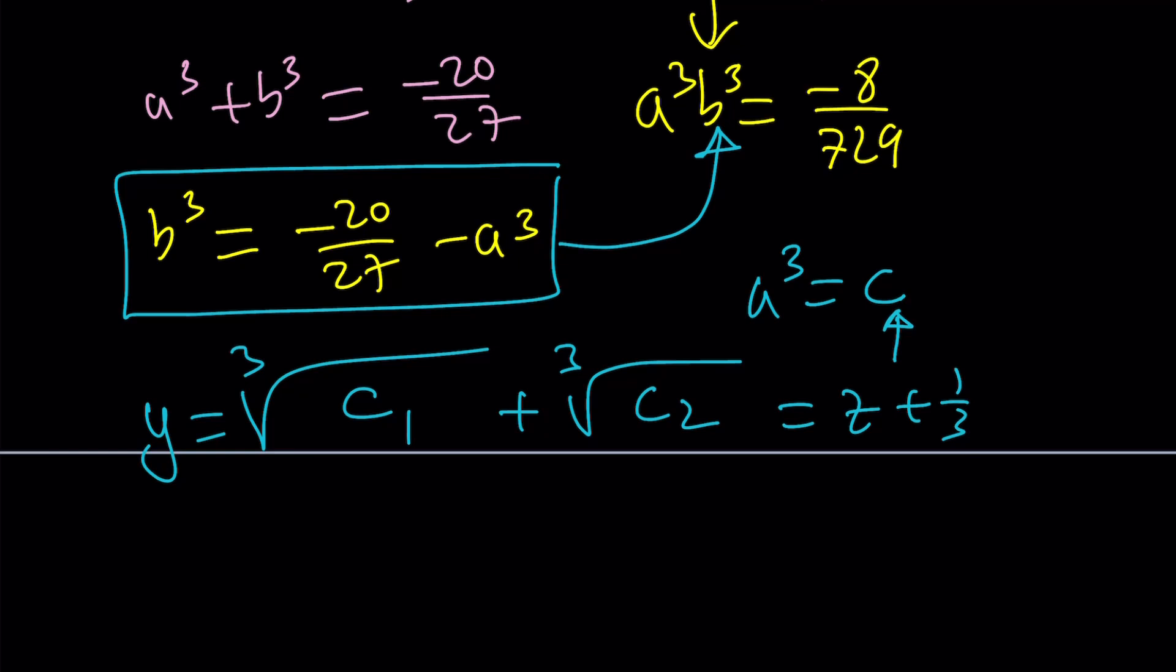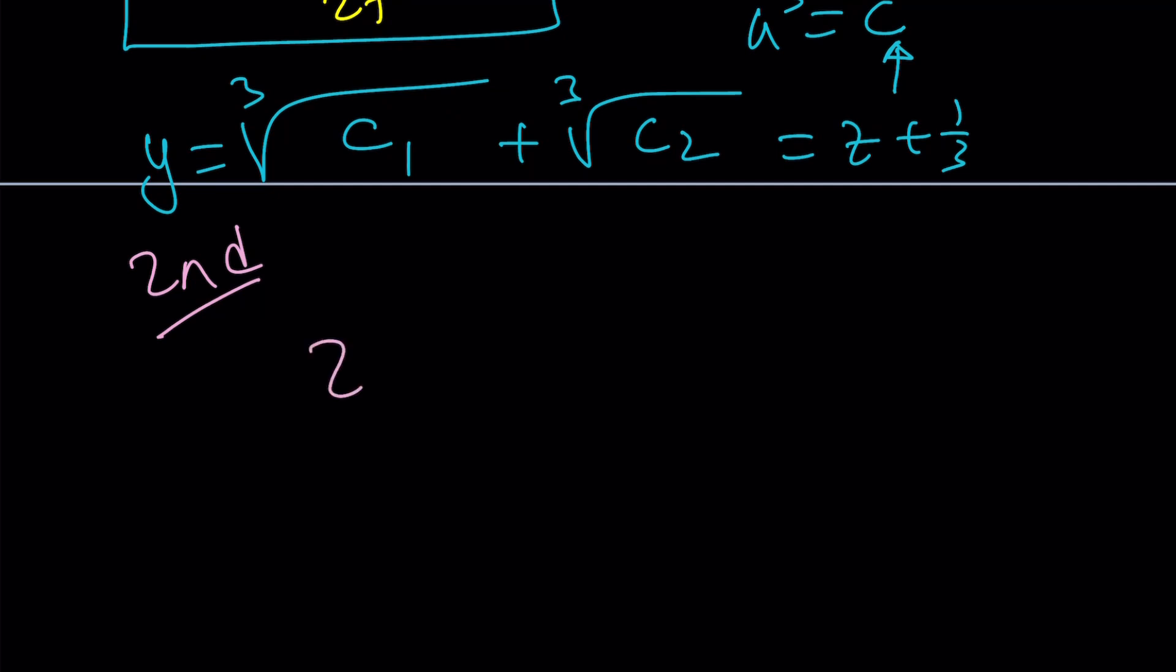Okay. Let's go ahead and take a look at the second method. Alright. So our equation was z cubed plus z squared plus z equals negative 1. Again. Try to guess.